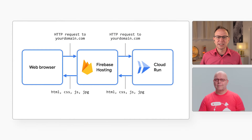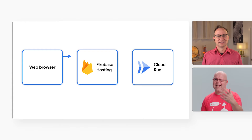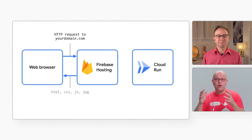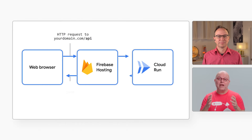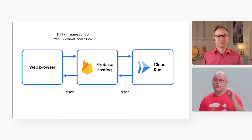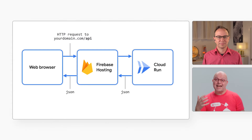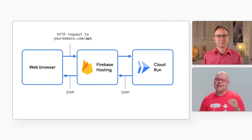You can also use Firebase tools to create a more custom setup. For example, if users access yourdomain.com, they get the static HTML and JavaScript for the homepage. But your JavaScript in their browser can call yourdomain.com/api to access your server-side API built in Cloud Run. This way, the static files come from Firebase Hosting and the server-side code still executes in Cloud Run — the best of both worlds.